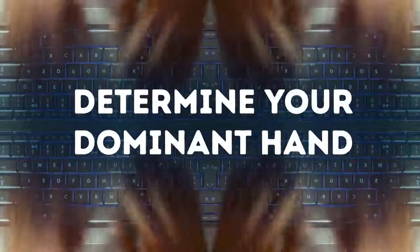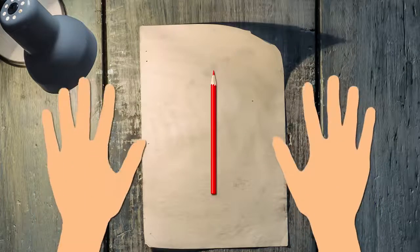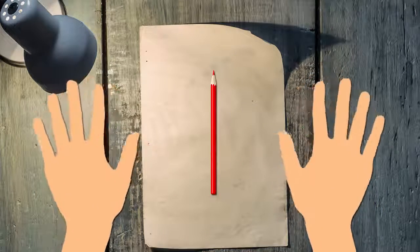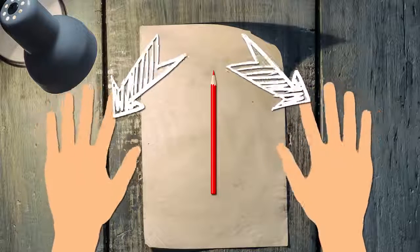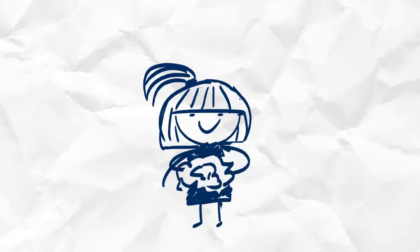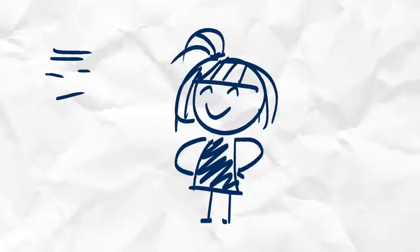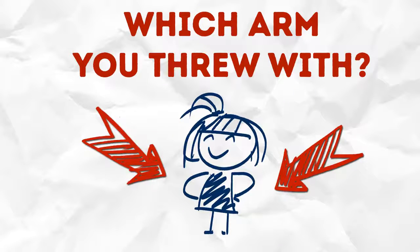Alright, determine your dominant hand. Could you do me a favor? Could you please pick up the object nearest to you? Yeah, that pencil you're using to write down your answers will do. Which hand did you use for the task? Now crumple a piece of paper up into a ball and throw it across the room as hard as you can. Let out your pent-up rage! Oh, you don't have any pent-up rage? It's okay. So, which arm did you throw with?